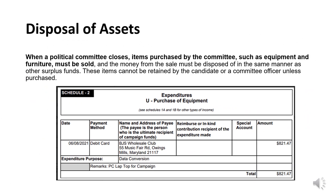Pursuant to Section 13-311 of the Election Law Article, a political committee must have disposed of all property or assets of the committee. When a political committee closes, items purchased by the committee such as equipment and furniture must be sold, and the money from the sale must be disposed of in the same manner as other surplus funds. These items cannot be retained by the candidate or the committee. The best way to verify all equipment or furniture has been disposed of is to review the campaign finance reports to ensure all items recorded in Schedule 2, Purchase of Equipment, have been properly disposed of. Alternatively, the committee can pull an Excel version of all campaign expenditures and place a filter on the expense purpose column to identify transactions in which equipment was purchased.